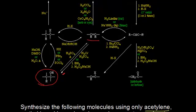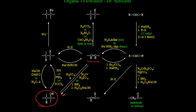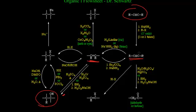I try to find acetylene on my flow sheet — it's all the way over here on the top right. I have an alkene, so I need to work backwards. What can I make an alkene from? I can make it from an alkyne. How do I turn that alkyne into an alkene? I can either use hydrogen gas and Lindlar palladium, which would give me a cis product, or I can use sodium metal and ammonia, which would give me the trans product.